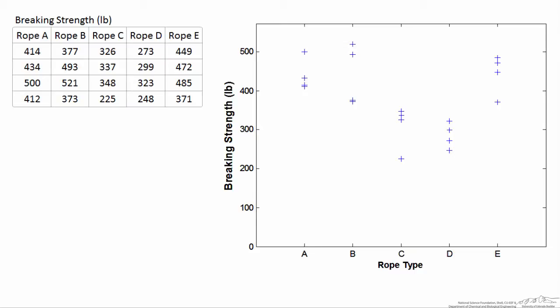The first thing you'll always want to do before making a test like this is to graph your data. So here I've graphed rope types A through E, and for each of the ropes we have four different measurements. I'm plotting the breaking strength in pounds on the vertical axis.